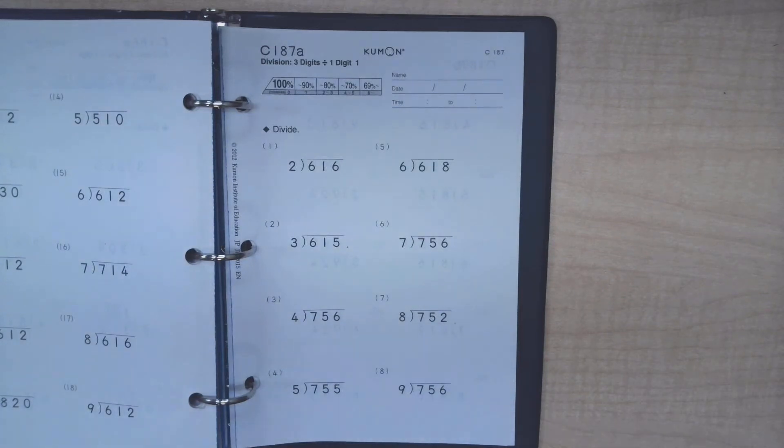This video is intended for Kumon Fishers West students. This is part two of the long division on level C.